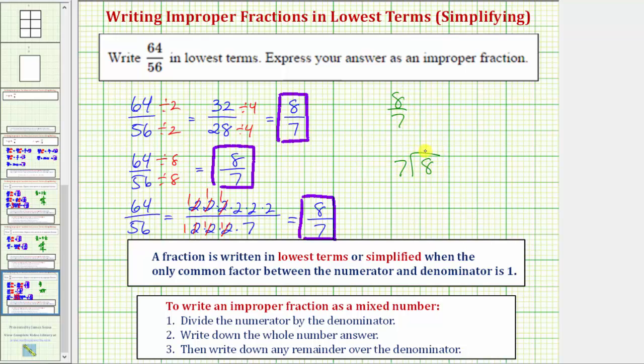If we divide, notice there's 1 seven in 8. 1 times 7 is 7. We subtract: 8 minus 7 equals 1. This division problem tells us 8/7 is equal to 1 whole from the quotient, and the fraction part is the remainder of 1 over the divisor, which is also the original denominator. So 8/7 equals 1 and 1/7.